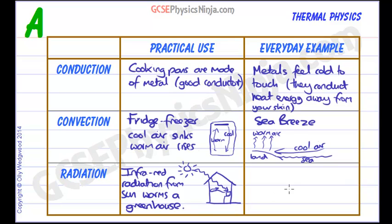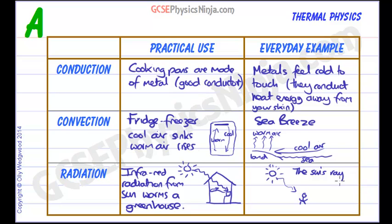Finally, an everyday example and observation of radiation — we'll use our friend the sun again. When you go out in the sun, the infrared radiation from the sun feels warm, and that's just an observation and effect of the radiation that has travelled through the vacuum of space millions and millions of kilometres from the sun to the earth. The sun's rays feel warm. These are some simple examples which are good to have at your fingertips in the exam.